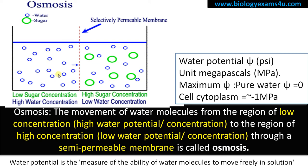Solution A has high water potential as it has less solute and more water molecules can move freely. Solution B has low water potential as there is more solute, so water molecules cannot move freely compared to solution A. Therefore, there will be a movement of water molecules from solution A to solution B.